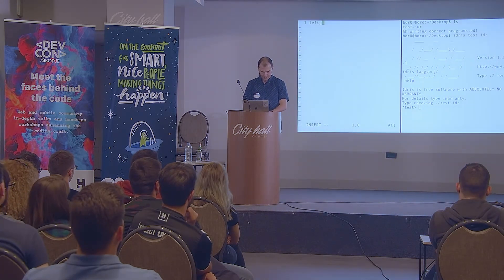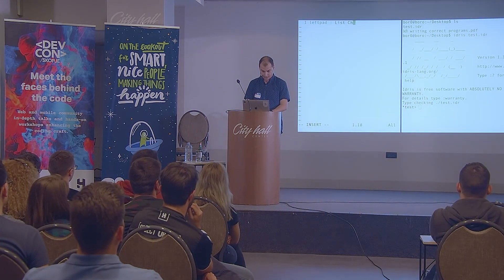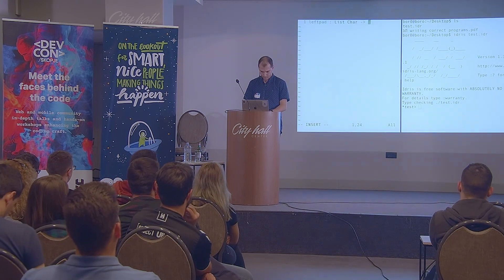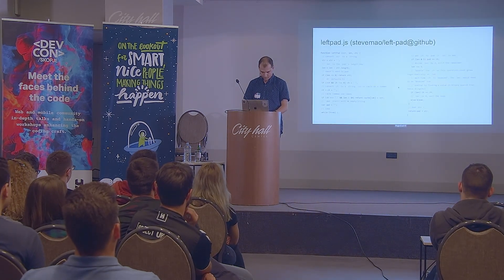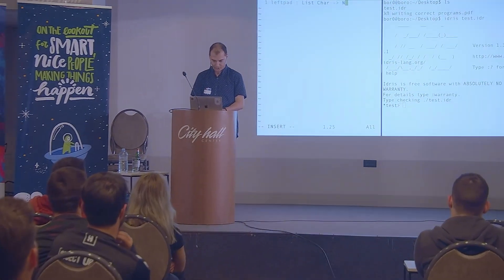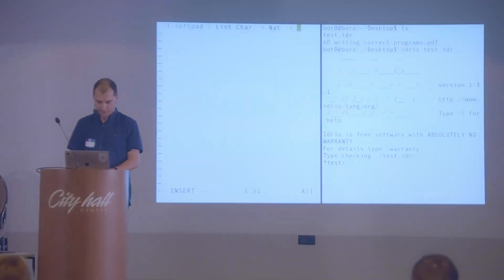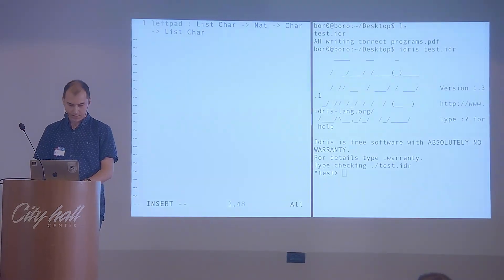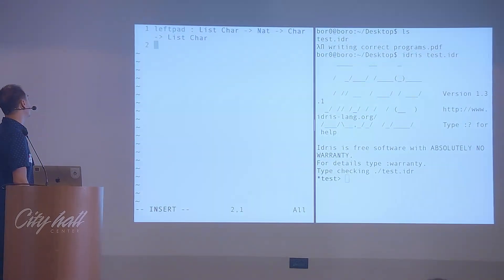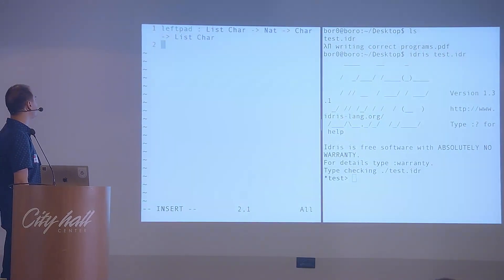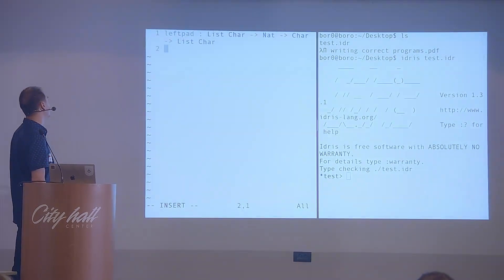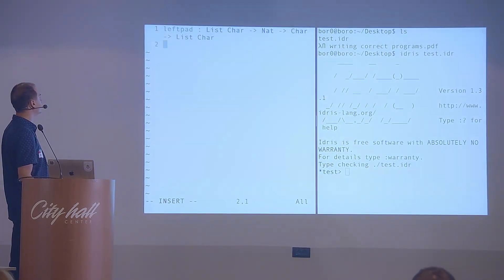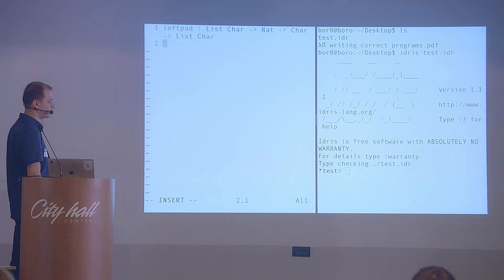So for start, maybe we can implement left pad. It should take a string, which is a list of characters. It's a target, which is a natural number, a length. And we also take a single character. And it should output a list of characters. So what we've done here is, we haven't yet implemented the program, but we defined, we named the function left pad, and we only set what's the input arguments, and what should they have to be.